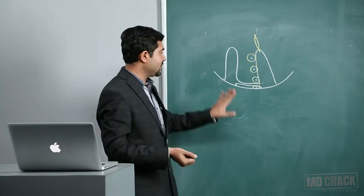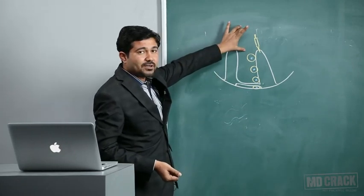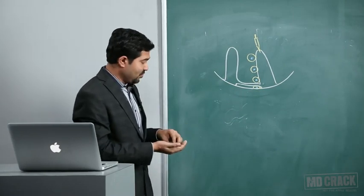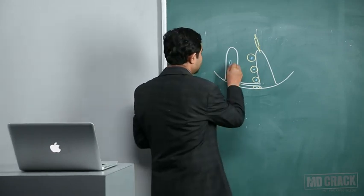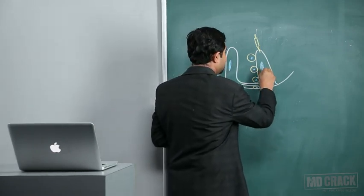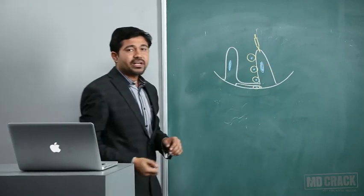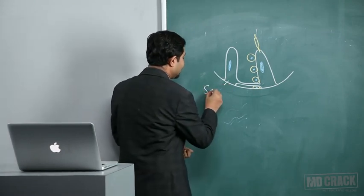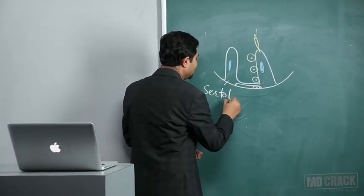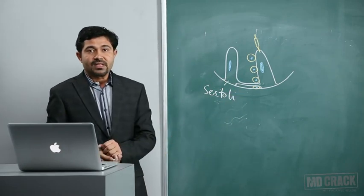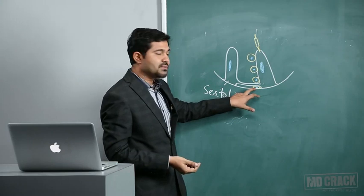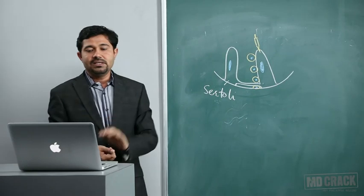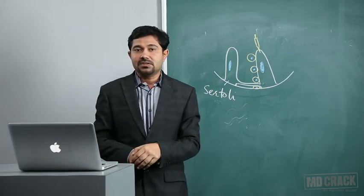This is the cross-section of the seminiferous tubule, showing the lumen and the interstitium. The seminiferous tubule contains two types of cells: the supporting cells called Sertoli cells, and the spermatogonia, which are the cells that will ultimately form sperms. We will first look at the functions of Sertoli cells.